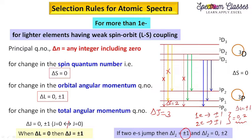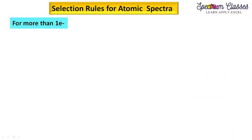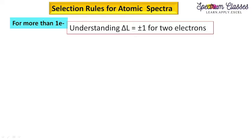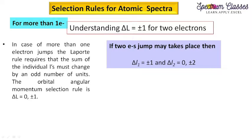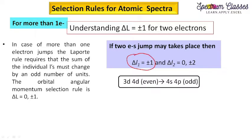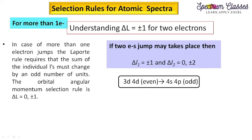For a two-electron system, I am going to explain how we get ΔL = ±1. For one electron it must be ±1, and for the second electron it must be 0 or ±2. If we add these two, we get ±1. If we consider ±1 and ±2, we get odd numbers like ±3 or ±1. So the change must be by an odd number of units — these are the conditions which need to be fulfilled for simultaneous jumps of two electrons.